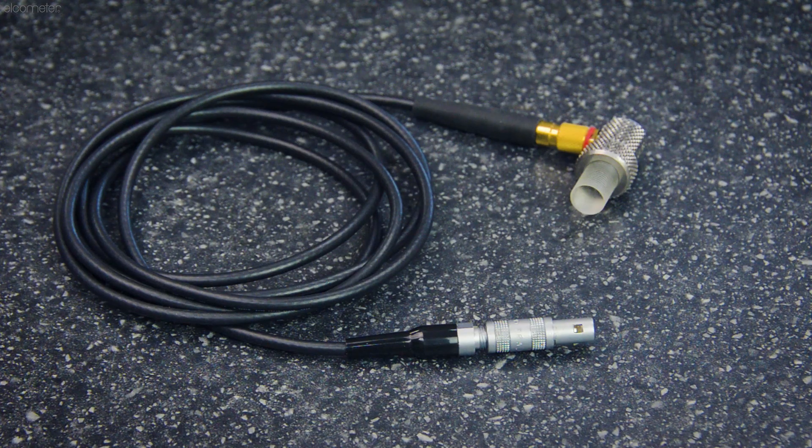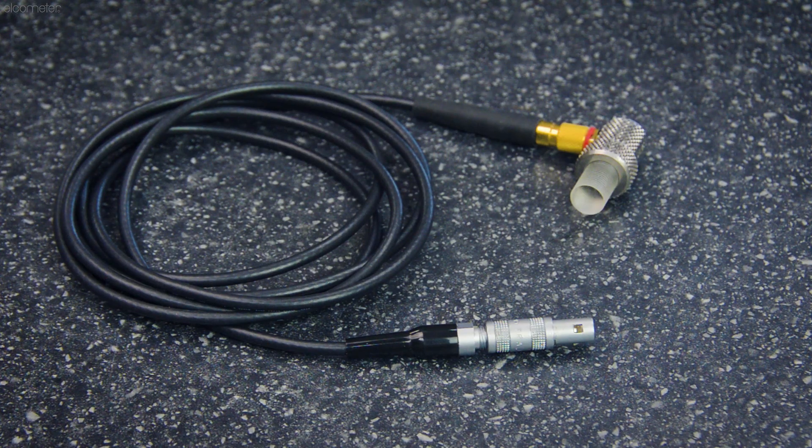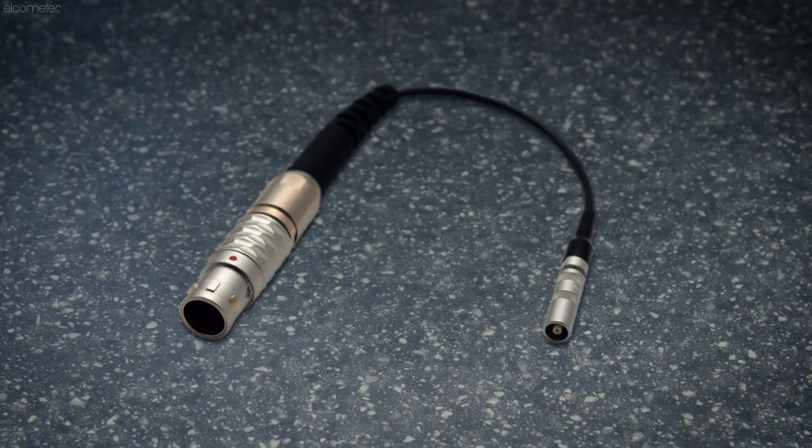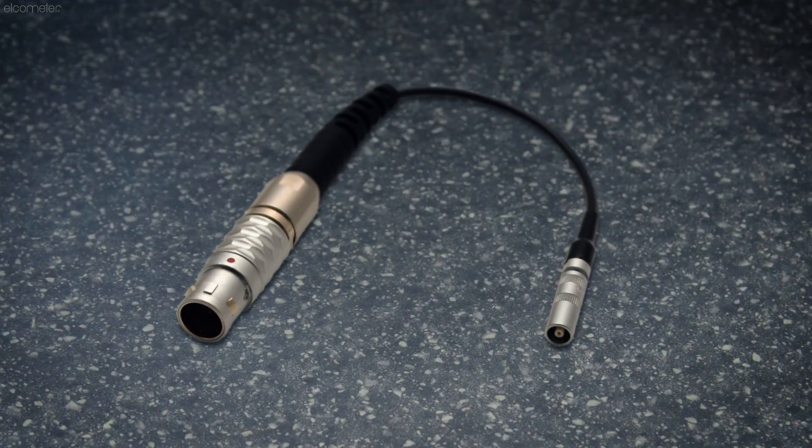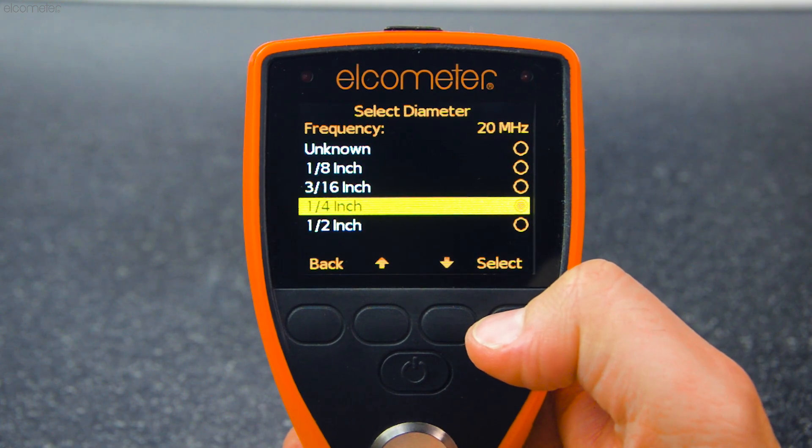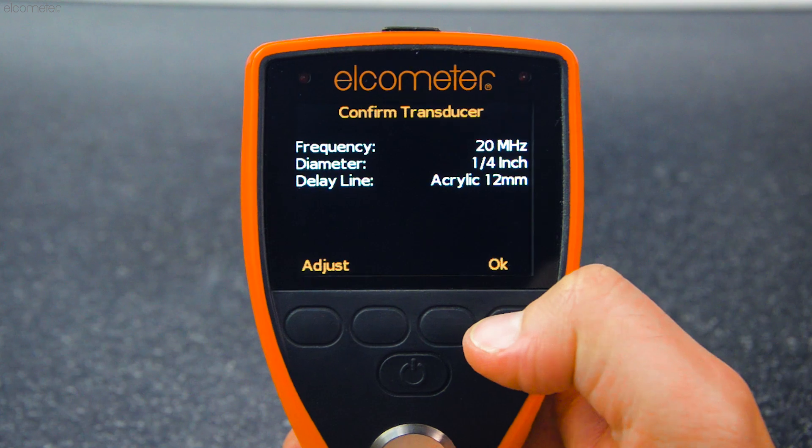If you already have a range of transducers you wish to use which have LEMO connectors, they can be connected to the Elcometer PTGs using a single element transducer adapter. You simply tell the gauge what transducer you're using, as well as the delay line.